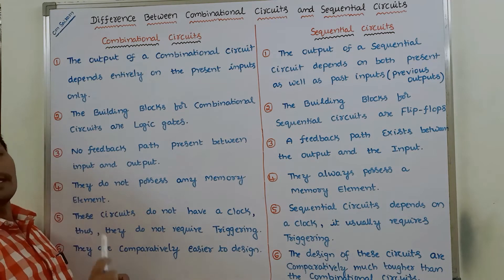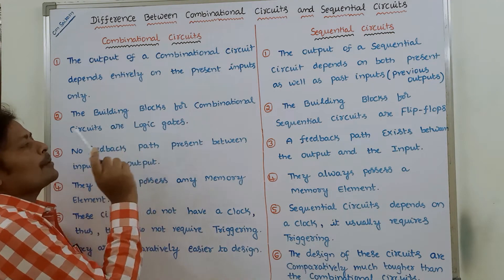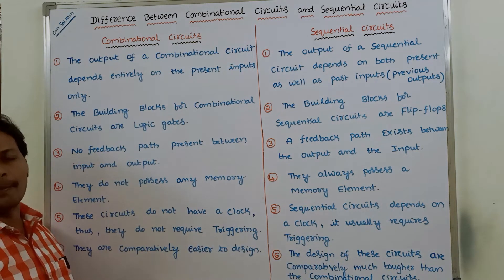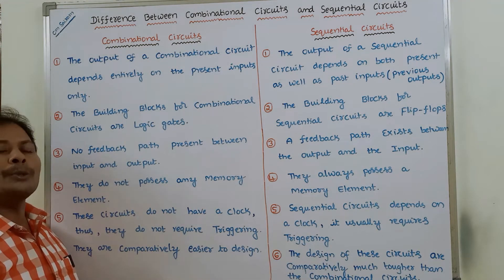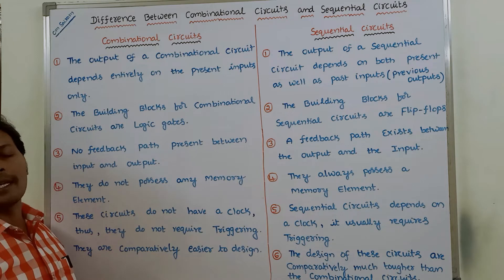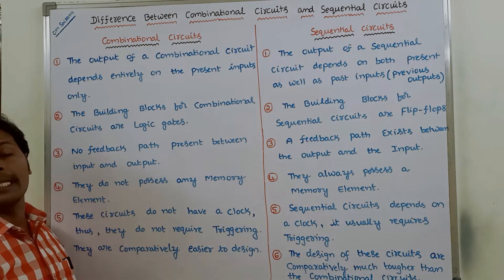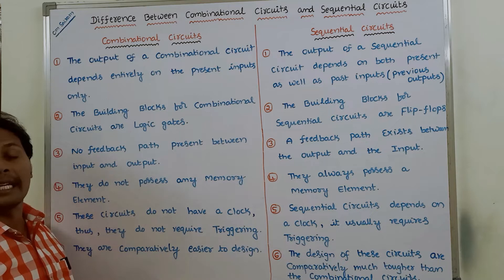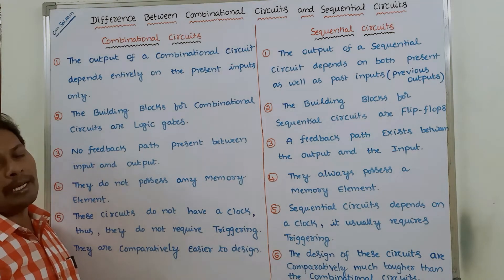Second point: the building blocks for combinational circuits are logic gates. That means, suppose we want to construct any combinational circuit, the basic building blocks are logic gates such as AND gate, OR gate, and NOT gate, which we use to construct any combinational circuit.